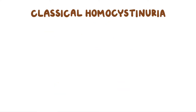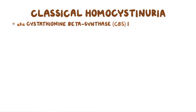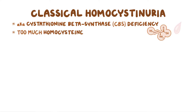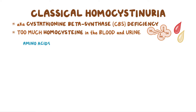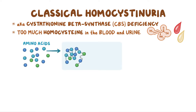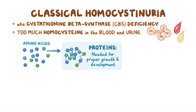Classical homocystinuria, also called cystathionine beta-synthase or CBS deficiency, is characterized by too much of the amino acid homocysteine in the blood and urine. Amino acids are the building blocks of proteins, and proteins are needed for proper growth and development of our bodies.